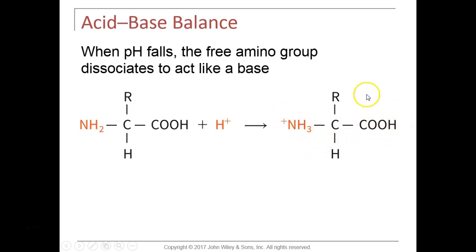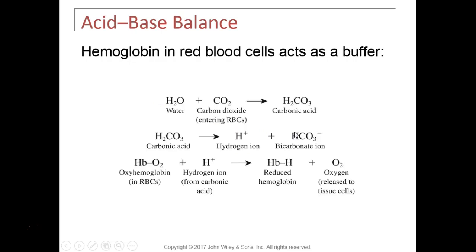To prevent the blood from becoming too acidic every time hydrogen is released from carbonic acid, that hydrogen can combine with hemoglobin — specifically oxyhemoglobin, which is hemoglobin saturated with oxygen. When hydrogen binds to hemoglobin, it kicks off the oxygen, releasing it so it can go to tissue cells for aerobic respiration. A low pH environment decreases hemoglobin's affinity for oxygen, increasing oxygen dissociation.